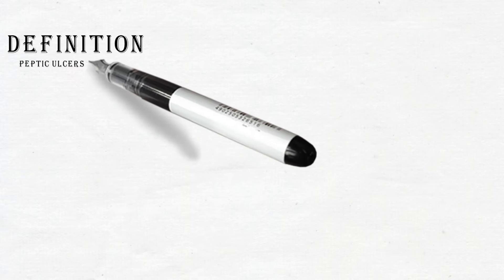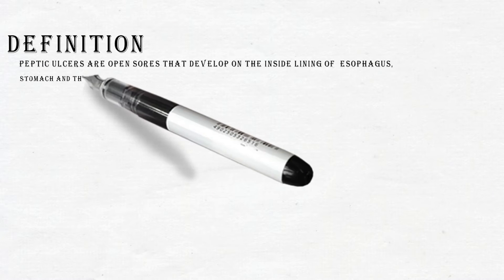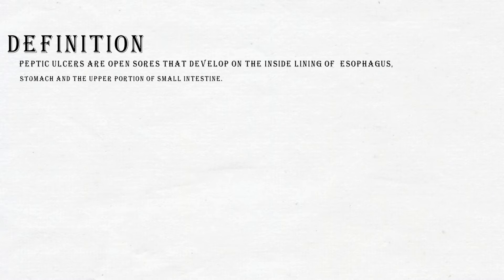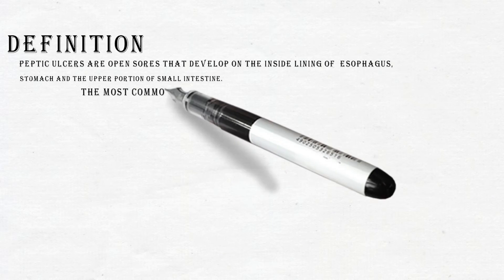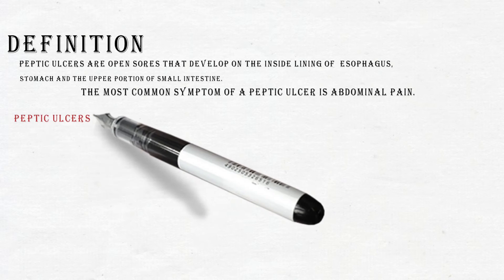Peptic ulcers definition. Peptic ulcers are the open sores that develop on the inside lining of the esophagus, stomach, and upper portion of the small intestine.